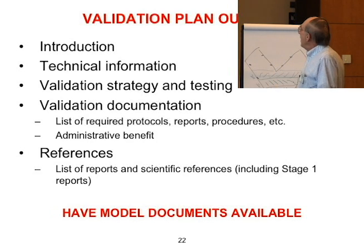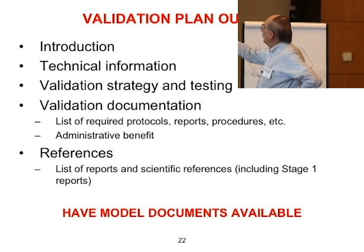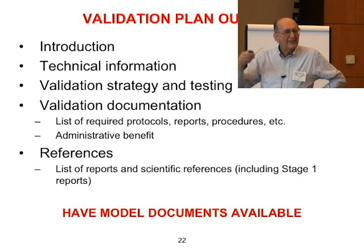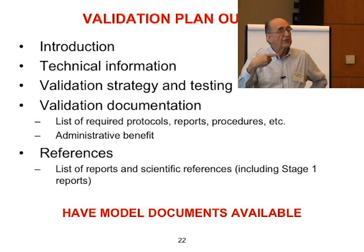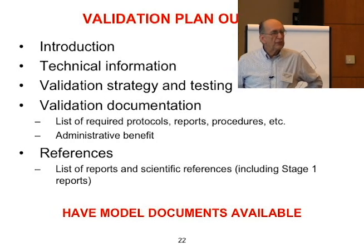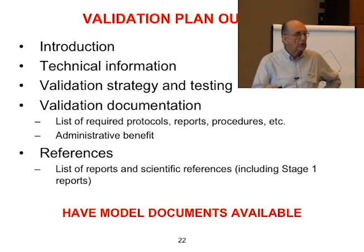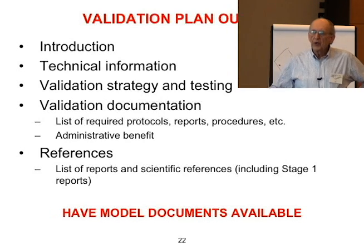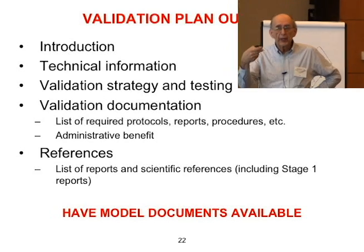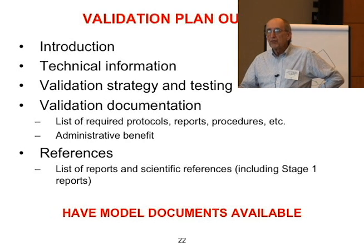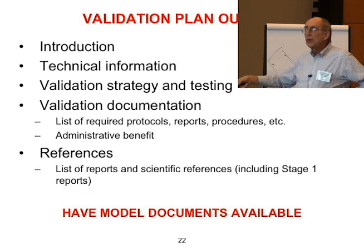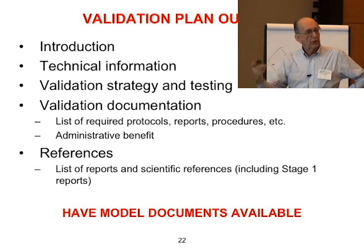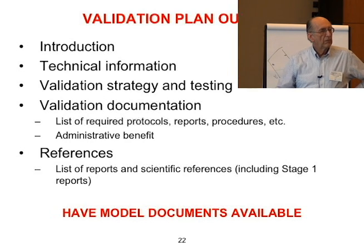So: technical information, a bit about the product, validation strategy — what's our approach — then the validation documentation listing, and finally the references. We're talking about the stage one documents — any technical information from textbooks, anything scientific and technical that's going to support your validation goes in the reference section. I wrote a few model documents, said 'this is what I want,' they went through the approval process, everyone was happy, and that became the standard. I would hand them out and say: make it like this one, appropriate for your product, but follow this outline. So this is your outline from which your model document would be prepared.